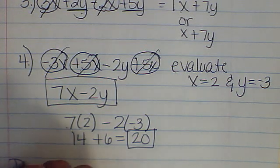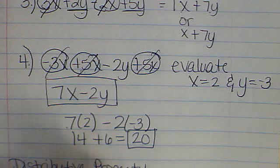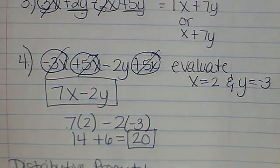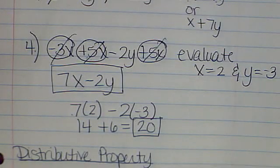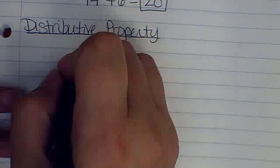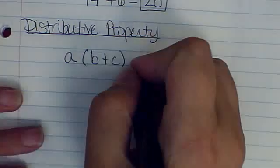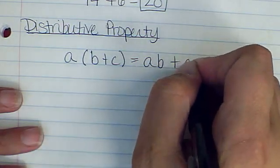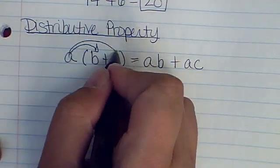Next, we need to talk about the distributive property. The distributive property says that a times the quantity b plus c equals ab plus ac. Remember, 'distribute' means to give out — in this case it means to multiply. You take a times b and a times c.